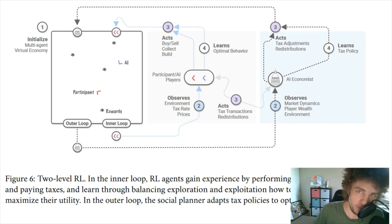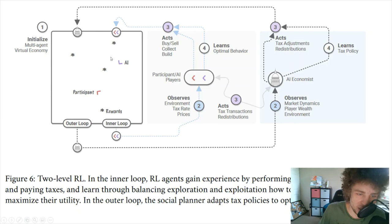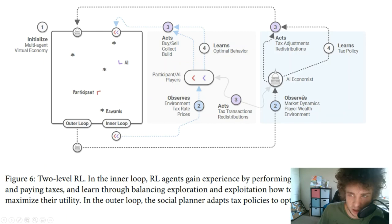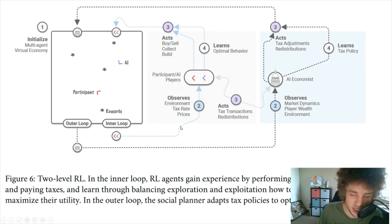This is the two-level deep reinforcement learning structure. The inner loop involves the participant AI players who learn optimal behavior — gathering, building, buying, and selling. The outer loop is the AI economist, which observes what's happening in the inner loop and learns the optimal tax policy to apply. As the paper states: in the inner loop, reinforcement learning agents gain experience by performing labor, receiving income, and paying taxes, learning through exploration-exploitation how to maximize their utility. In the outer loop, the social planner sets tax policies to maximize its social objective.